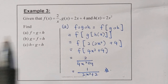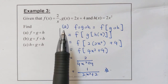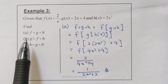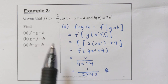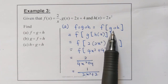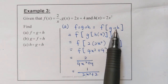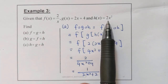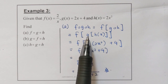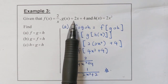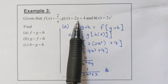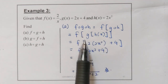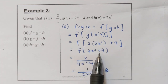Example 3. Given that function f(x) equals 2 over x, g(x) equals 2x plus 4, and h(x) equals 2x squared. For a, you need to find f of g of h. This is actually f(g(h(x))). So you settle the one on the most right, which is function h. We know that function h is 2x squared, so we substitute 2x squared into our function g: 2 times (2x squared) plus 4. We settle the one in the bracket, so it will be 4x squared plus 4.